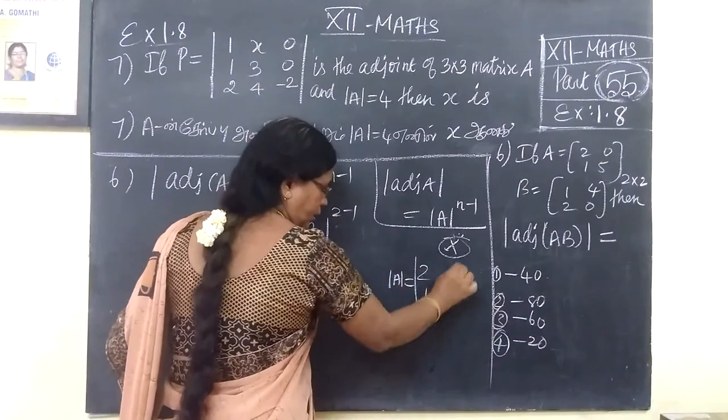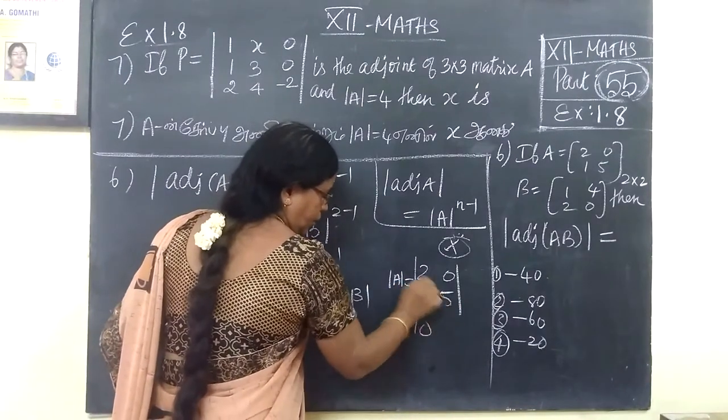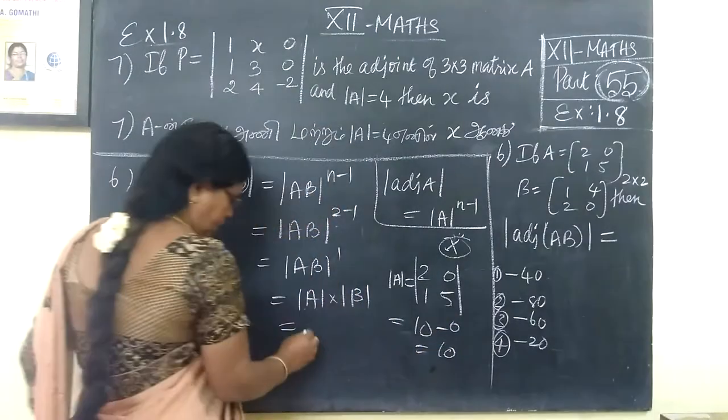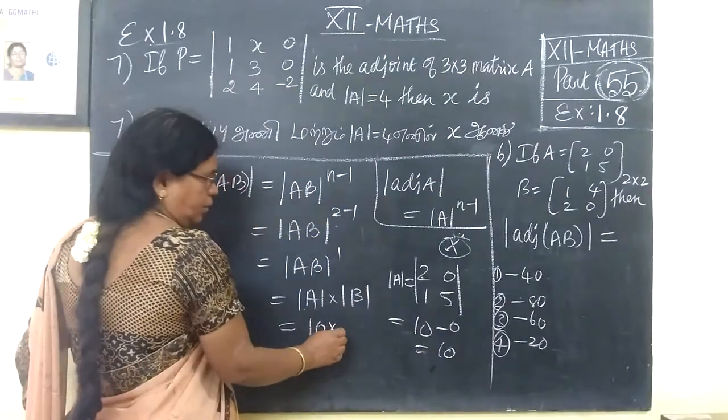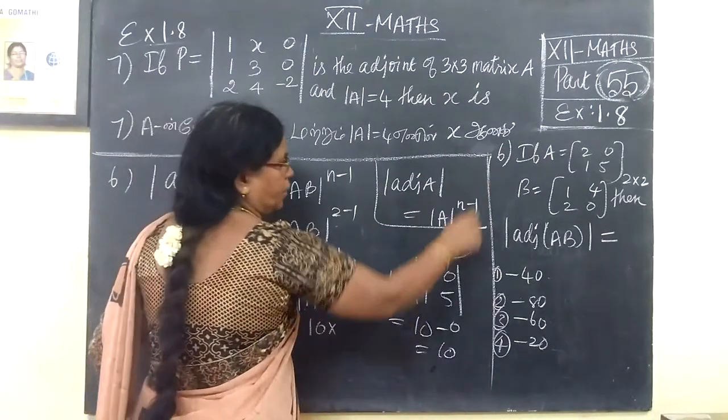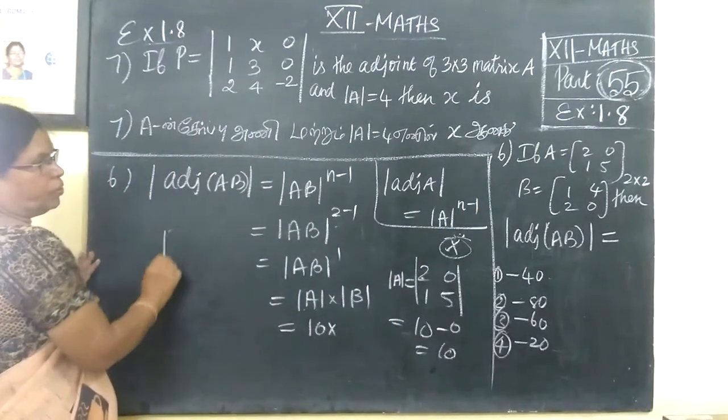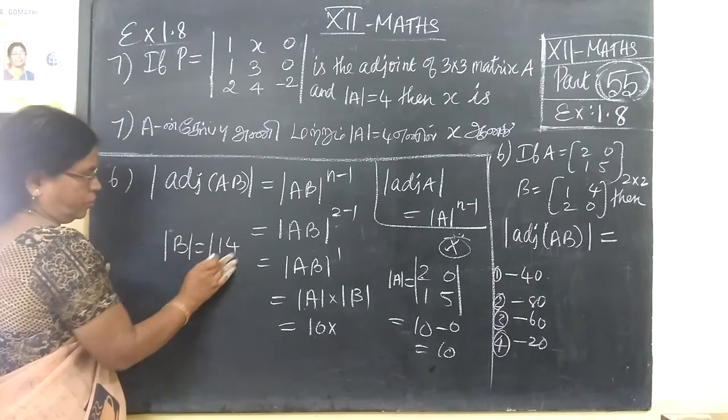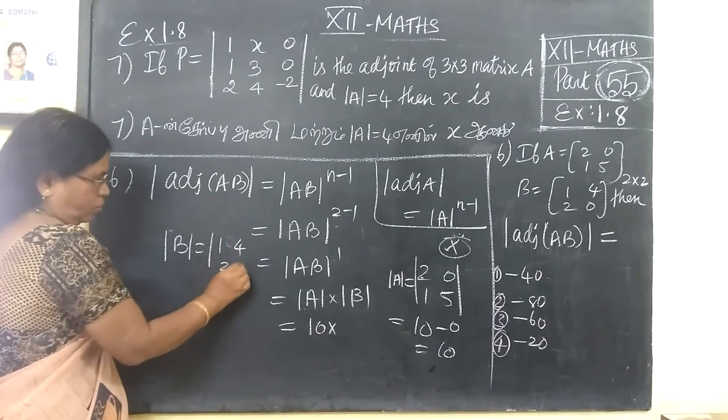Determinant of A. Next, determinant of B has been asked. Determinant of B: 1, 4, then 2, 0.